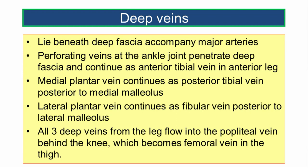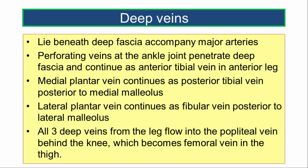The deep veins lie beneath the deep fascia and accompany the major arteries. Below the knee, they are seen as pairs of venae comitantes accompanying the arteries; above the knee, they are single named veins such as the popliteal and femoral veins. Perforating veins at the ankle joint penetrate the deep fascia and continue as the anterior tibial vein in the anterior compartment of the leg. The medial plantar vein continues as the posterior tibial vein posterior to the medial malleolus, and the lateral plantar vein continues as the fibular vein posterior to the lateral malleolus.